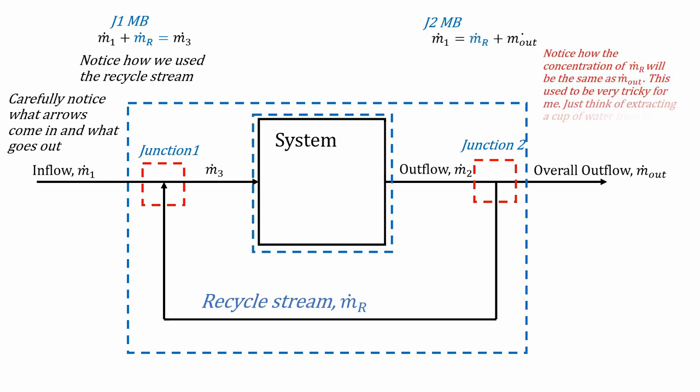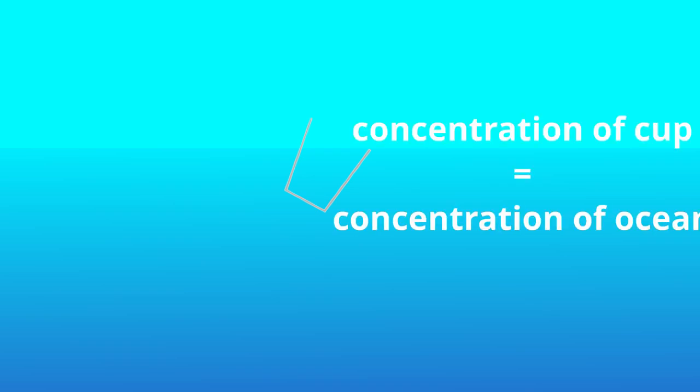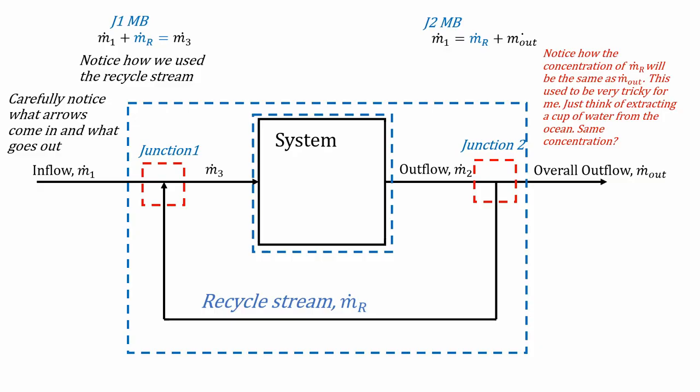And now try to see what's going to be the concentration of the recycle stream. Notice how it is actually going to be the same as ṁ_out. This used to be really tricky for me, but just think of a cup of water. You take a cup of water from the ocean. So the ocean is at some concentration of chloride, right? And then you grab a cup of water and you extract that cup of water out. Even though it's a smaller system of the same ocean, it's still the same concentration.